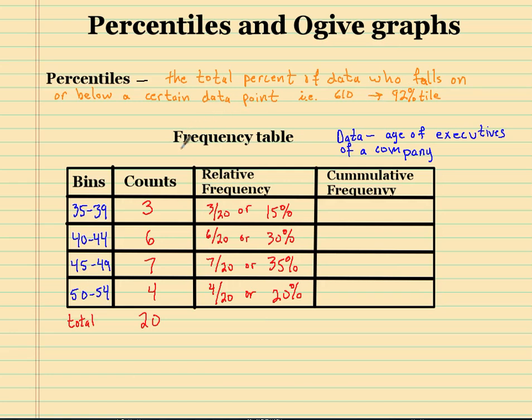All right, so now we're going to look at how to make an ogive graph, and this is a frequency table. If you haven't seen the video on how to make a histogram by hand, go back and look at that, and I talk about a frequency table, because we use frequency tables to graph histograms, and we could also use it to graph an ogive. So my data here is the age of executives of a company, and this is the age.